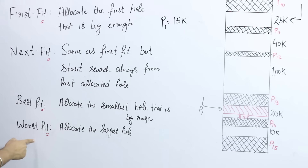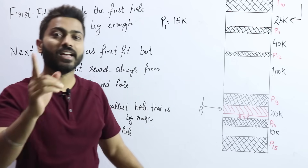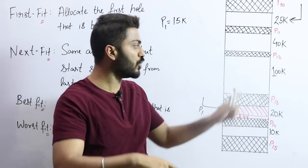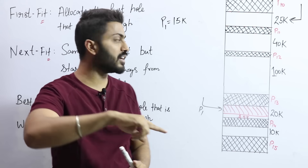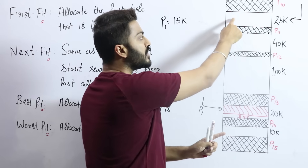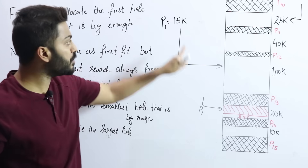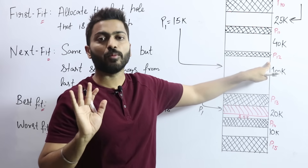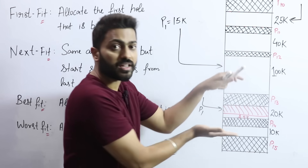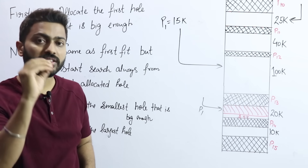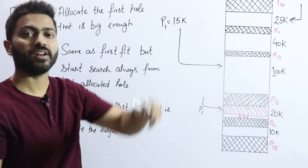According to Worst Fit, we select the largest hole. It also searches the entire list, but it places the process in the hole where the leftover space after allocation is the maximum — it is the exact opposite of Best Fit. For example, if P1 of size 15KB is placed in the largest hole of 100KB, the remaining portion is 85KB, which is the maximum leftover. The idea is that after placing a process, the hole remaining should be large enough to accommodate future processes.